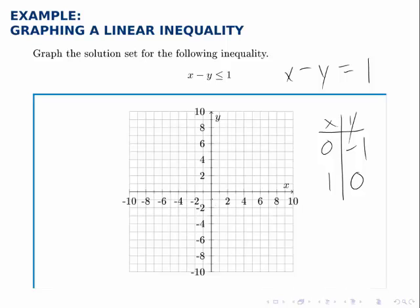The point 0, negative 1 is down here, and the point 1, 0 is here. So we can graph that line, and again we'll draw a solid line connecting those two points.